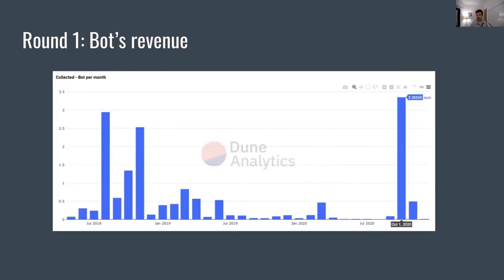Now that we have a tracker on this bot, we can look back at its history and see that it has been quite profitable, although not too much over the course of the years, and that it has also been operating for quite some time — back as late as 2018, which is quite interesting.